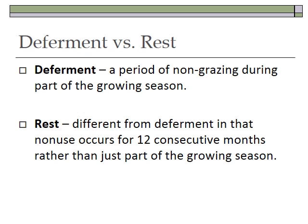A couple of terms need to be cleared up before we go further: the distinction between deferment and rest. These are quite different, especially in systems with seasonal greenness. A deferment is any period of non-grazing from the initiation of growth in the spring through the period where the plant produces seeds — just a part of the growing season. Rest is different: rest is deferment for at least one whole calendar year.